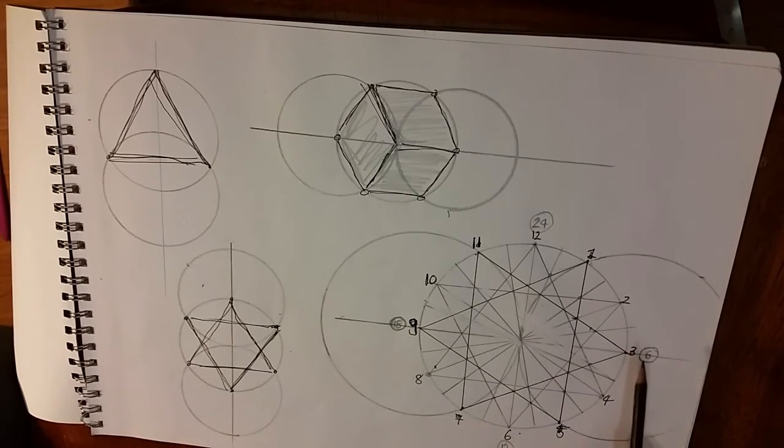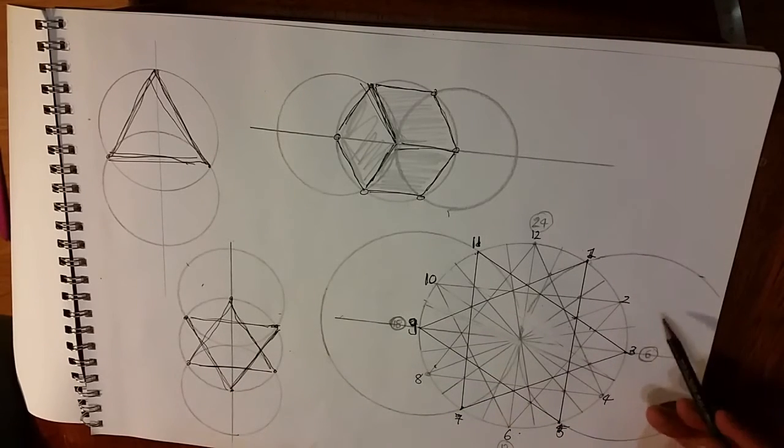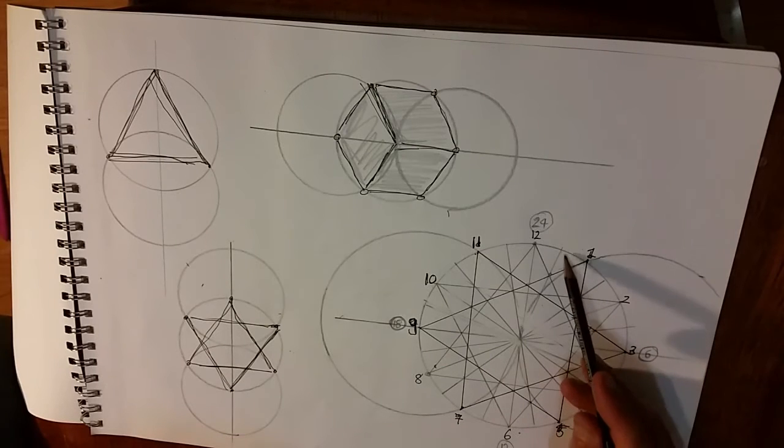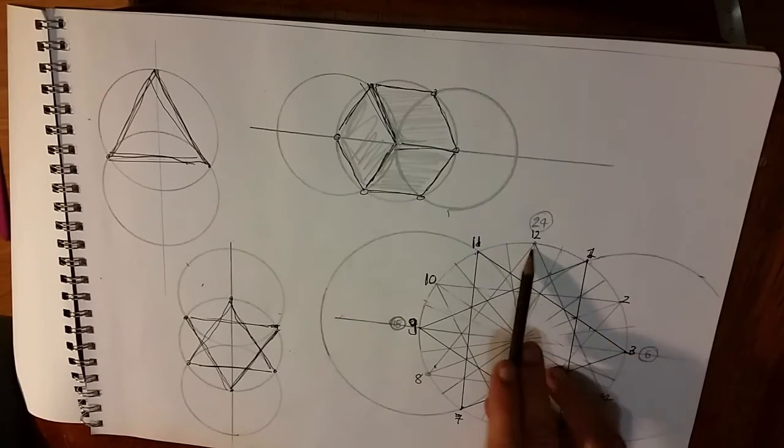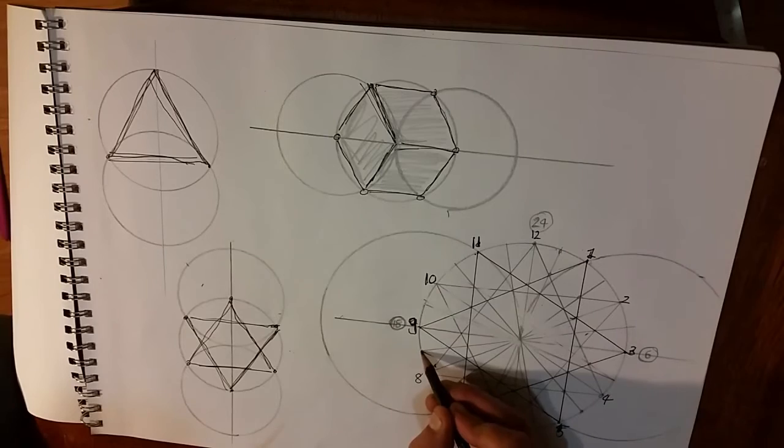Now the same rule to create the star of David and the twelfth pointed star. We need to create a series of equilateral triangles so twelve and a half to four and a half to eight and a half.